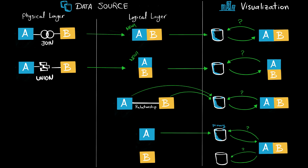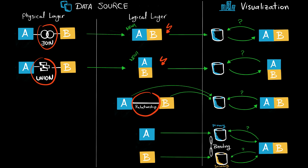Finally, with data blending we have two data sources: the primary and the secondary. Tableau sends one query to the primary data source and another to the secondary. Importantly, aggregation happens before the data is combined, and the combining happens at the visualization level. So joins and unions occur in the physical layer, relationships in the logical layer, and data blending at the visualization level.